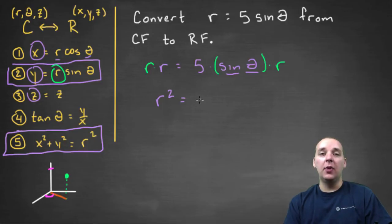And then the right hand side turns out to be five times r sine theta, which would convert easily into a y. And so now we're practically done.